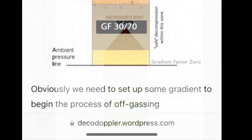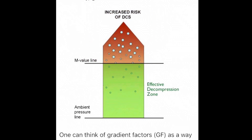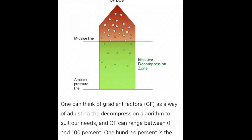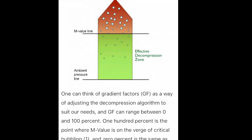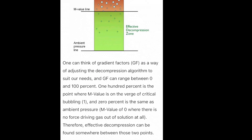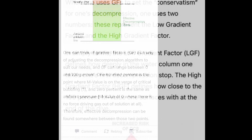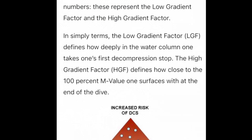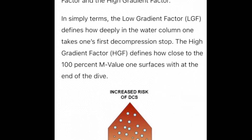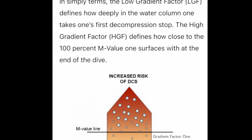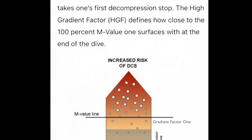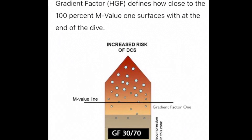What are gradient factors? Let's take a look at decodoppler.com. In simple terms, the low gradient factor is how deep in the water column one takes the first decompression stop. The second number on the Shearwater, or the high gradient factor, defines how close to the 100% M value one surfaces with at the end of the dive.